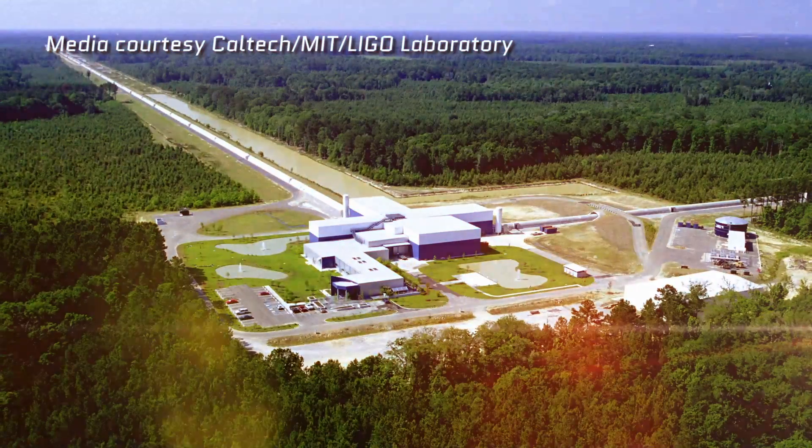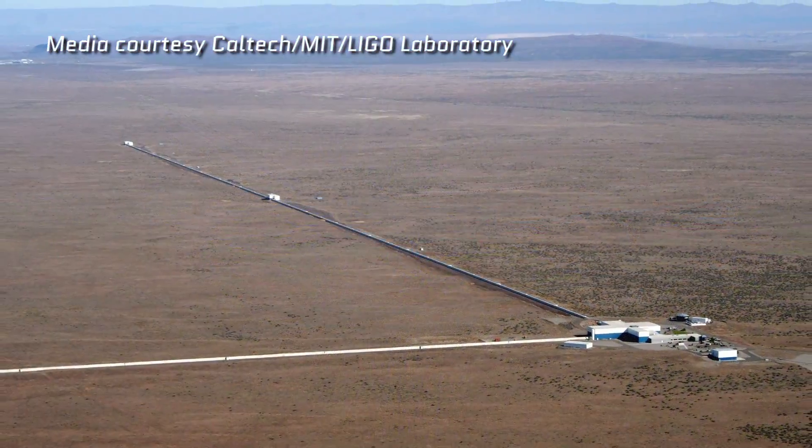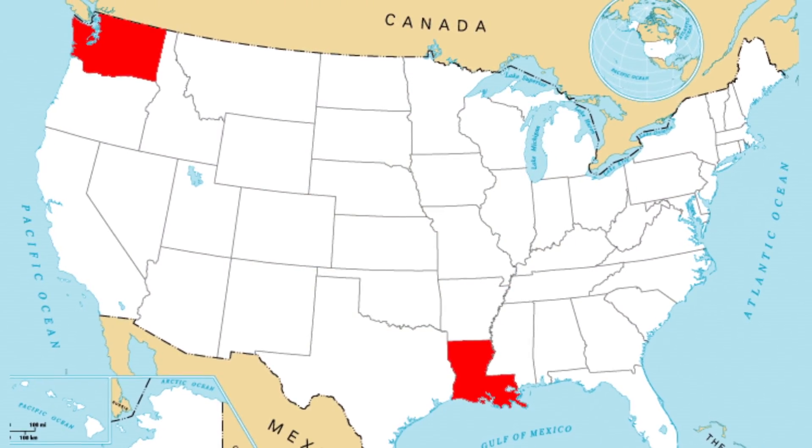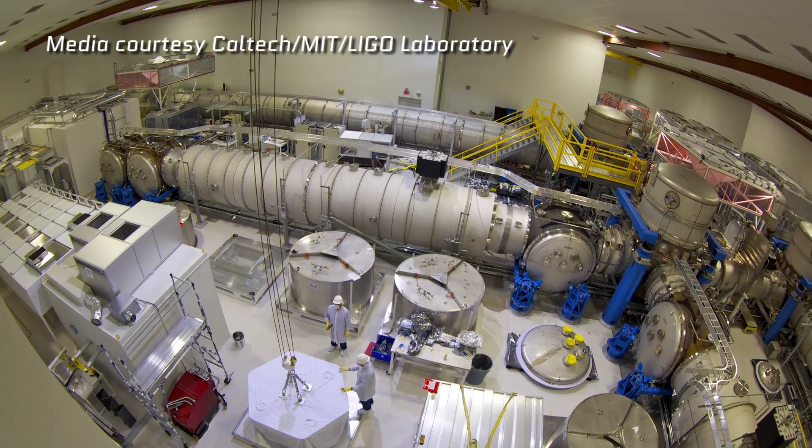So how on Earth did we detect such a thing? The answer is with the LIGO Observatory. Now the observatory has a pair of enormous detectors. One of them is in Louisiana, and the other is in Washington State. What's really cool about LIGO is its elegant design.